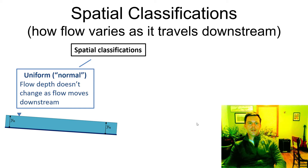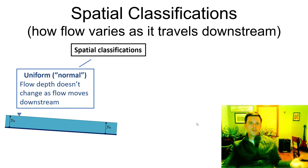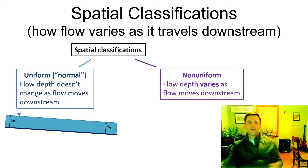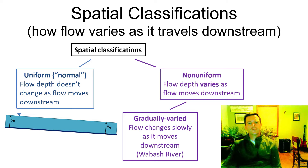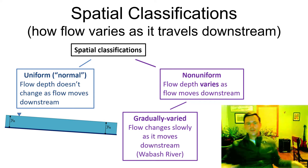Now let's talk about spatial classifications — how the flow is varying with distance downstream or whether it's varying at all. Uniform flow is where the flow is not varying with distance downstream. The other type is non-uniform, where it is varying with downstream distance. The first kind of non-uniform flow is gradually varied. Most rivers and streams in a tranquil section are gradually varying — the depth is slowly changing as the channel changes. A good example would be the Wabash River at Lafayette, where the flow depth is slowly adjusting to changes in the channel, the cross section, and the bottom slope.